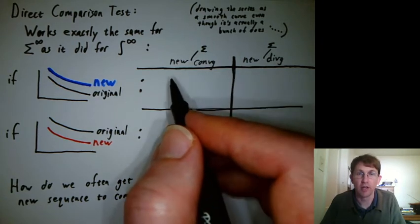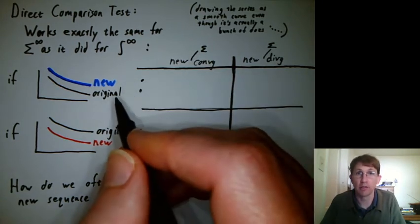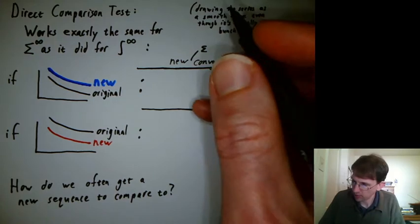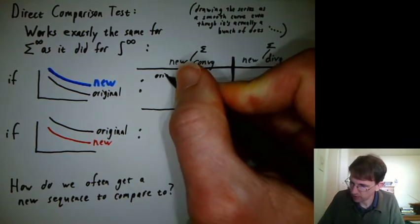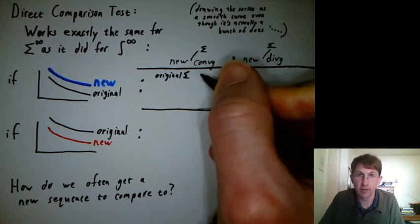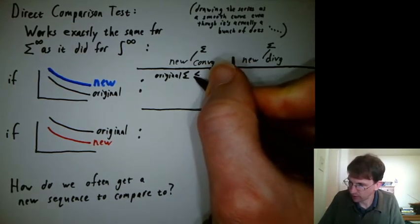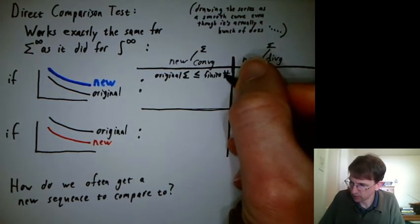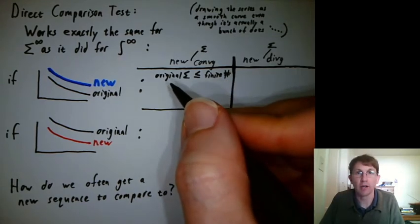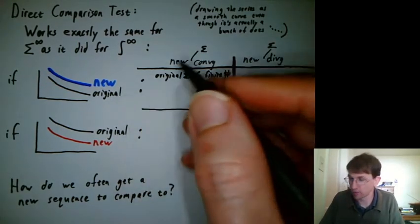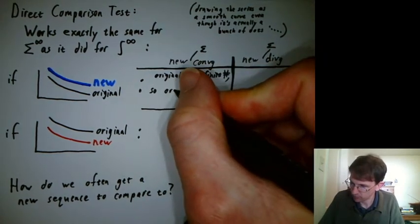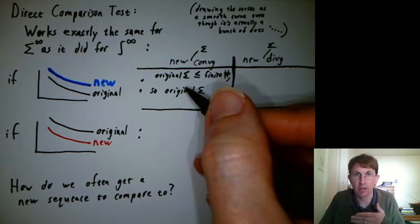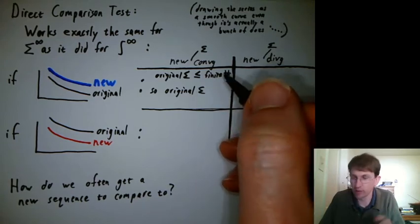What can we say about the original? Can we say that the original converges, or not sure? Well, here this is saying that the original sum, the original series, is less than or equal to some finite number, and so the original sequence must converge as well. There's no way the original sum can shoot off to infinity if it's less than some finite number.